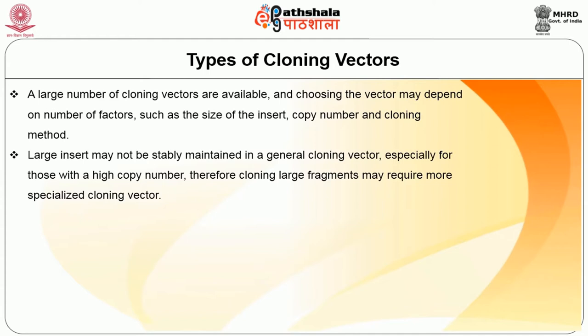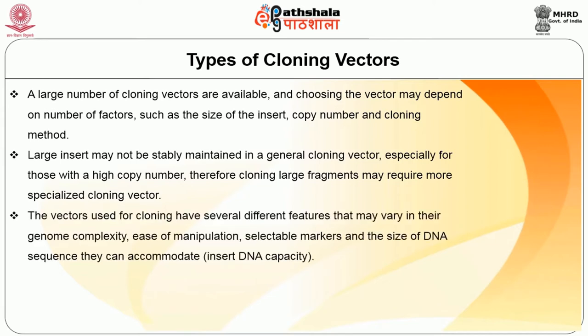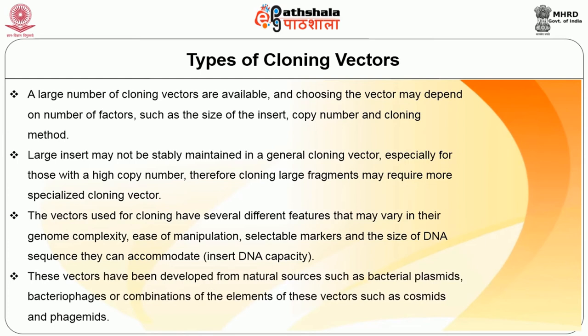Cloning large fragments may require more specialized cloning vectors. The vectors used for cloning have several different features that may vary in their genome complexity, ease of manipulation, selectable markers, and the size of DNA sequence they can accommodate — that is, insert DNA capacity. These vectors have been developed from natural sources such as bacterial plasmids, bacteriophages, or combinations such as cosmids or phagemids. Vectors with larger DNA insert capacities are usually more difficult to manipulate.